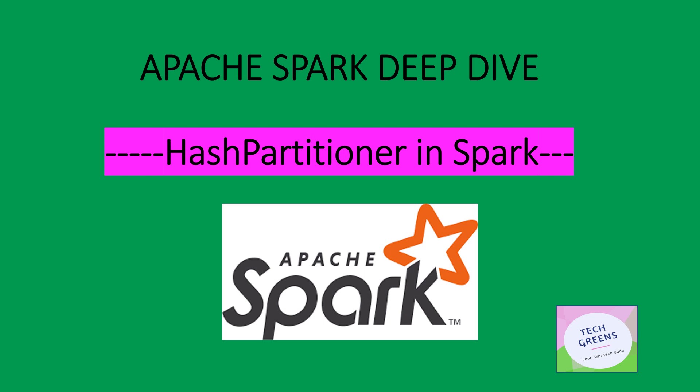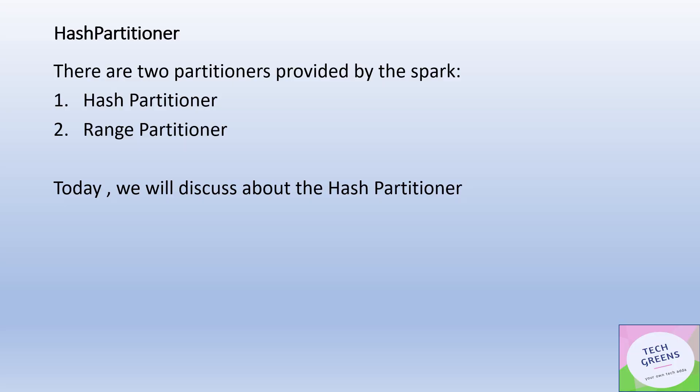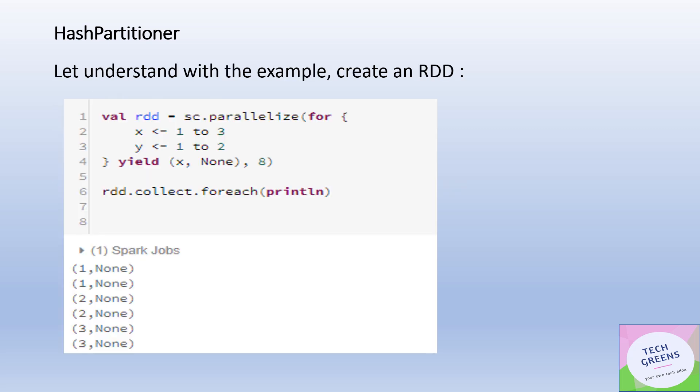Hello friends, welcome back to Tech with Vresh. Today, in the continuation of our series on Apache Spark deep dive, we'll discuss a very interesting concept: the Hash Partitioner in the Apache Spark world. This is one of the two partitioners provided by Apache Spark — the Hash Partitioner and the Range Partitioner — and we'll look in detail at how hash partitioning works.